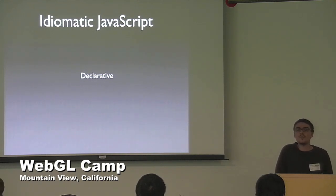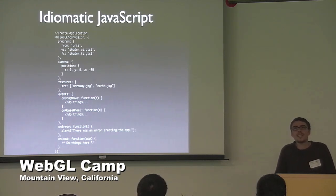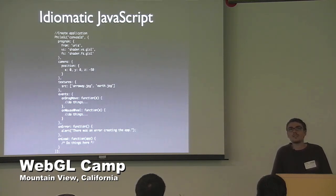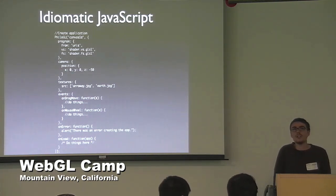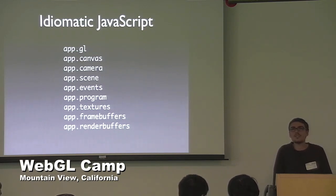It's very declarative. To create an application, you just call one function, PhiloGL, passing the canvas ID and a descriptor object with sections for program or programs, camera, textures, scene with lighting, and event callbacks. You don't have to worry about anything - it creates the entire application and runs the onLoad callback with an application handle that has the GL context and other useful properties. Super straightforward creation of a WebGL program.